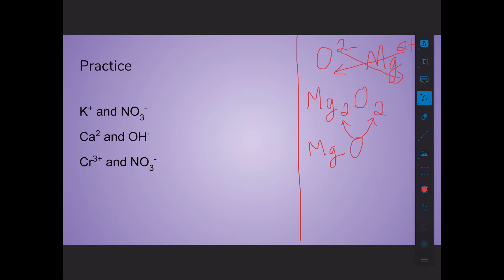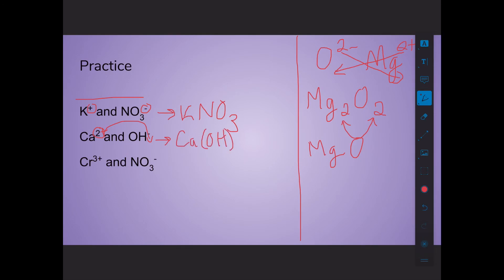For calcium 2+ and hydroxide OH−, the formula becomes Ca(OH)2, with parentheses because there are two hydroxide groups. For chromium 3+ and nitrate 1−, the formula becomes Cr(NO3)3. These are pretty easy to write once I give you the numbers, and you'll practice them quite a bit in class.